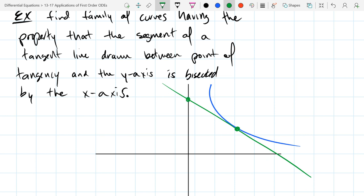And the point of tangency and the y-axis. So there's the point of tangency and y-axis. And we're only concerned with this part of the tangent line, the tangent segment we're talking about. And what property should this segment have? Bisected by the x-axis. So if I bisect it, that's the middle point, and that's definitely not the x-axis. So that's not a good curve.